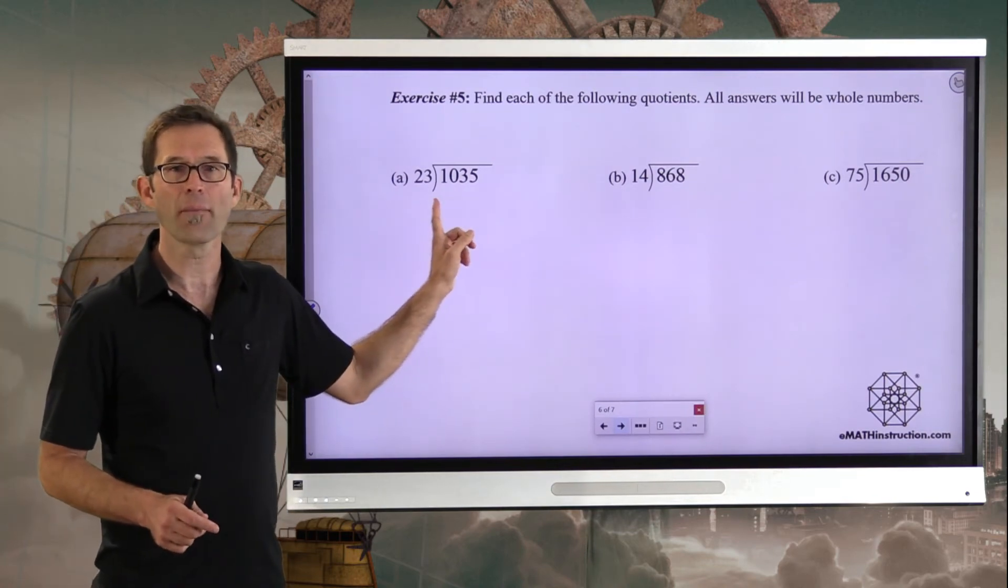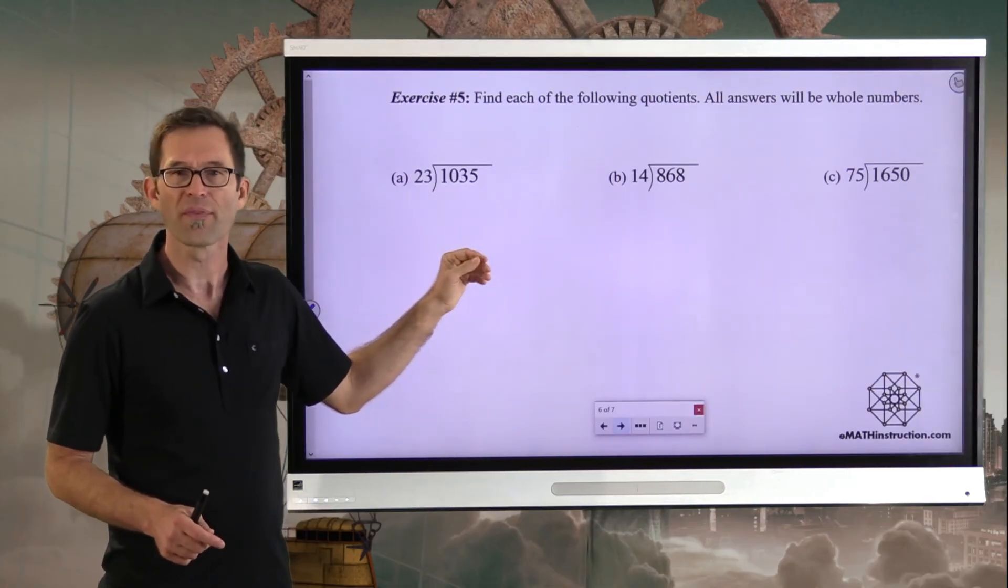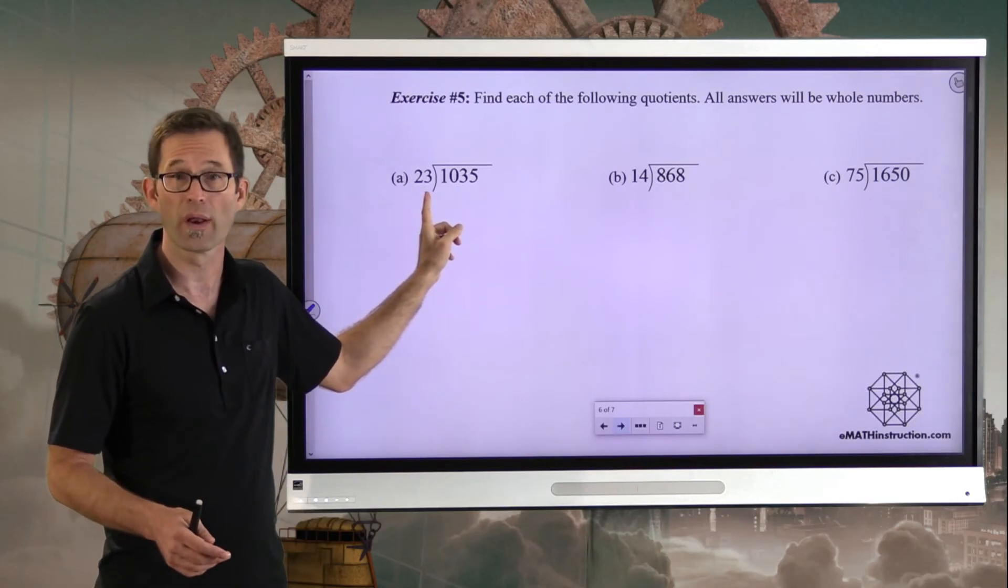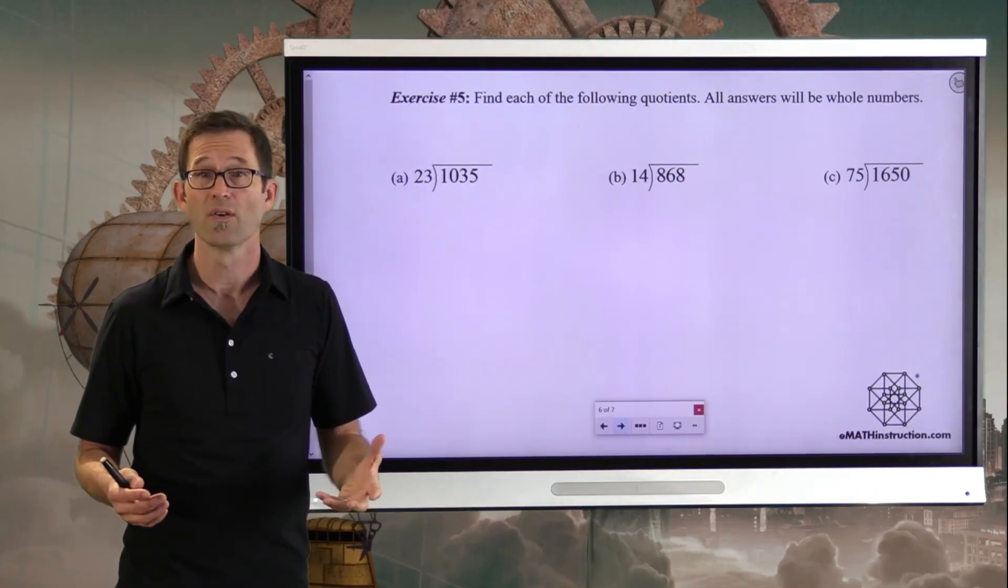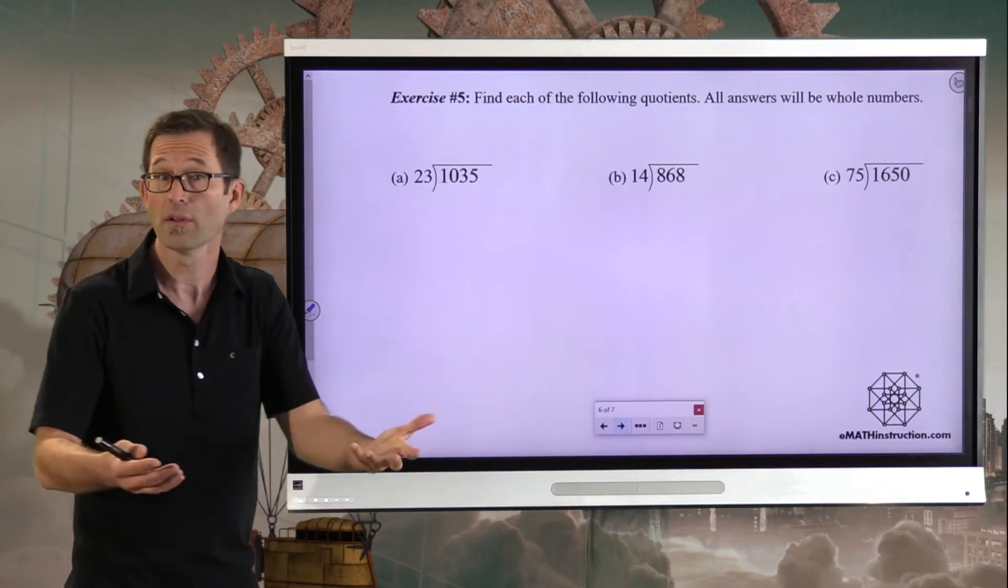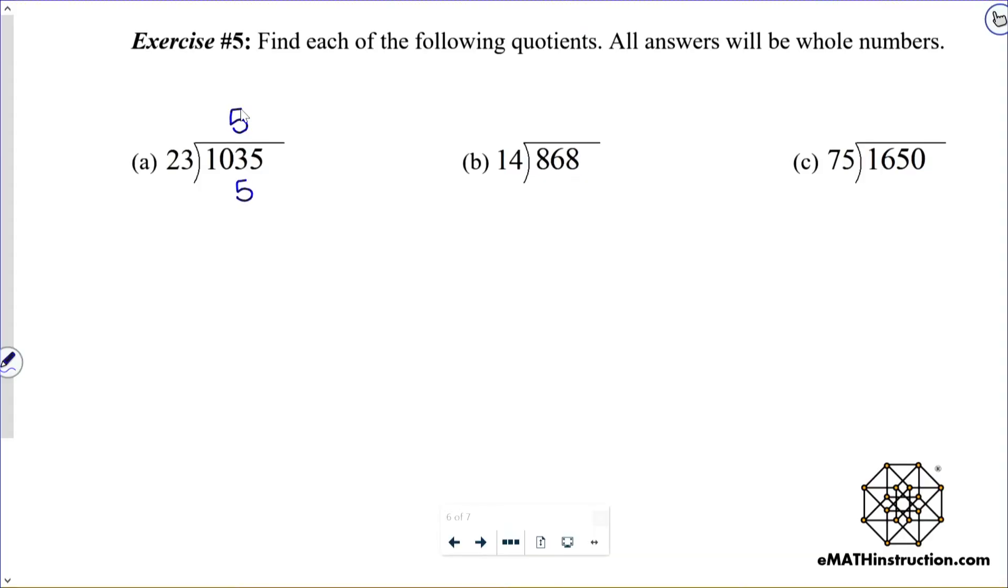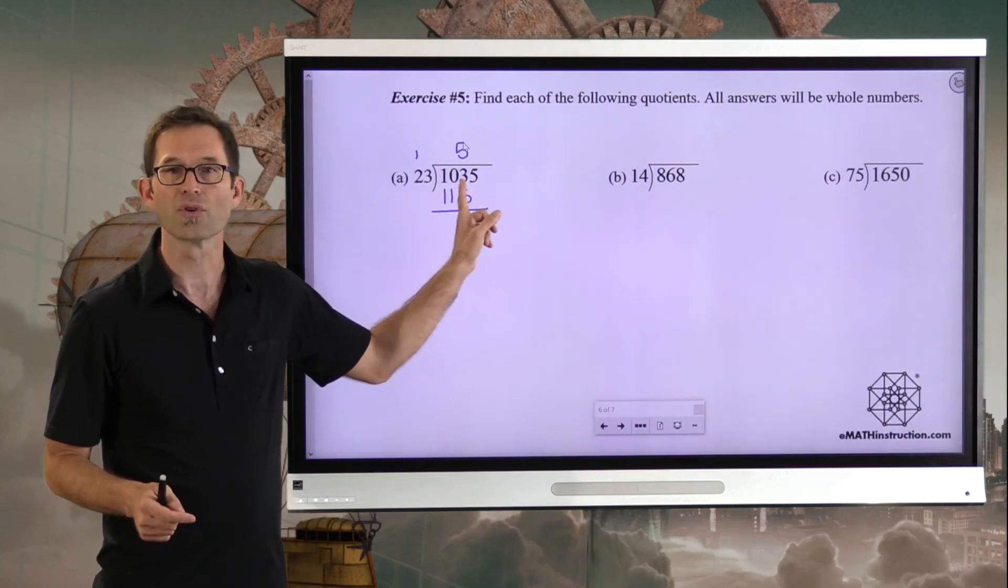The way you want to think about this is kind of like, well, will 23 go into the first two-digit number, 10? No, because 10 is smaller than 23. So now I have to think about how many times 23 goes into 103. And that can be challenging. It can be tough. So maybe you make a guess. Like, for instance, let's say I thought, let me try five. So I'm going to put a five up here. And five times 23, that's going to be 15, carry the one. Five times two is 10 and one is 11.